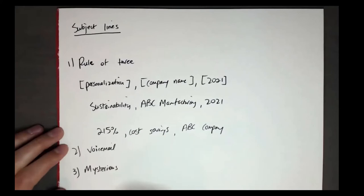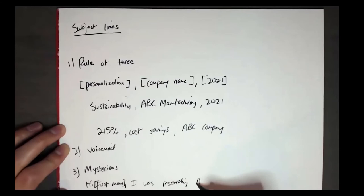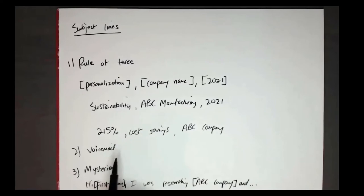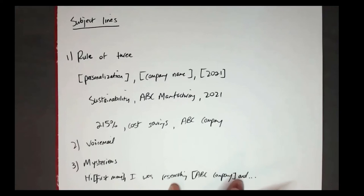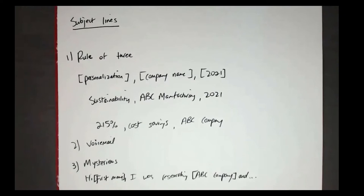The third subject line approach is to be a little mysterious and create intrigue. Something like: 'Hi [First Name], I was researching ABC company and...' with a trailing ellipsis. When someone says they were researching you, it creates a lot of intrigue — you want to know what they found. All three of these, when used correctly, have 50% plus open rates in my experience. But remember — if the next sentence of your email then talks all about you, they can see that in the preview text, so the first sentence matters just as much.